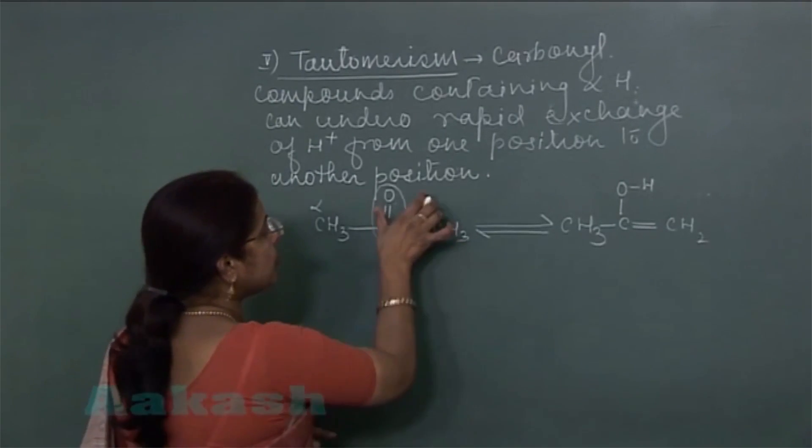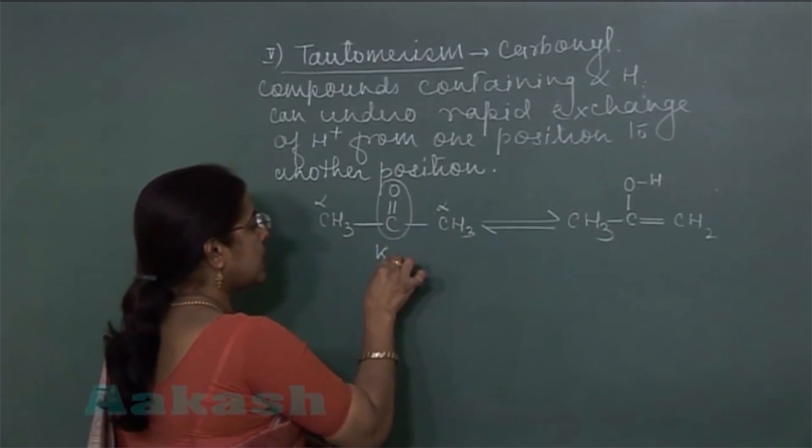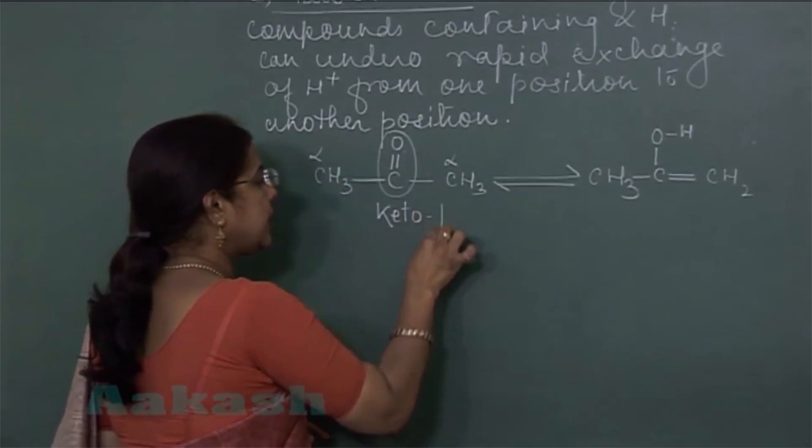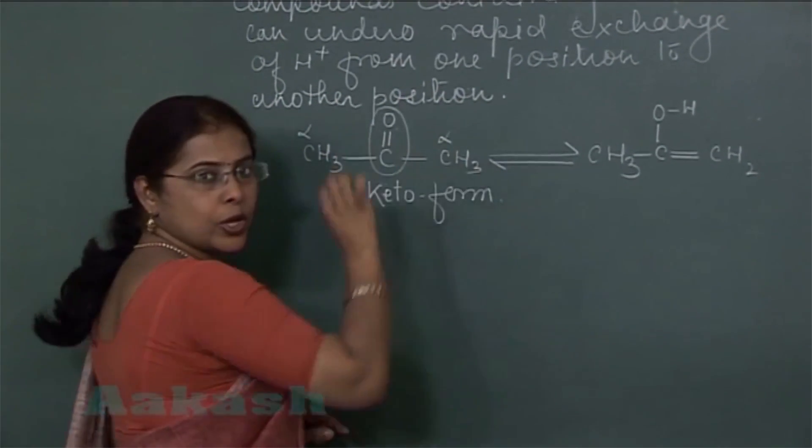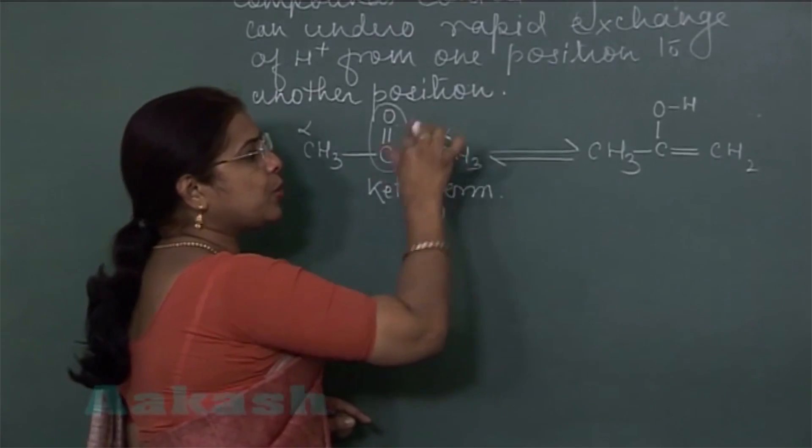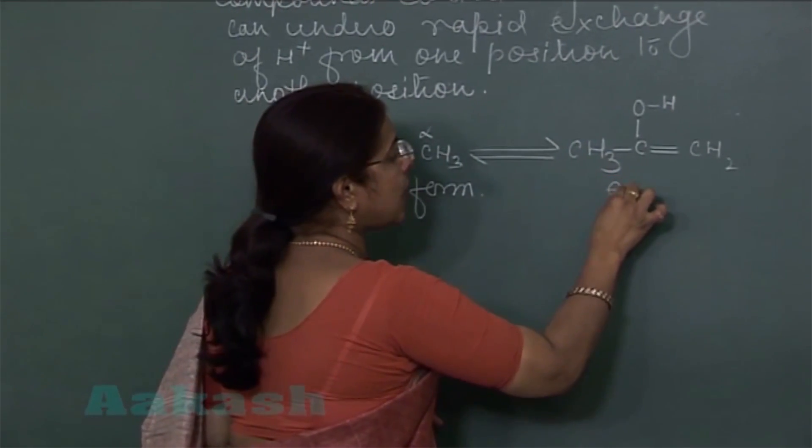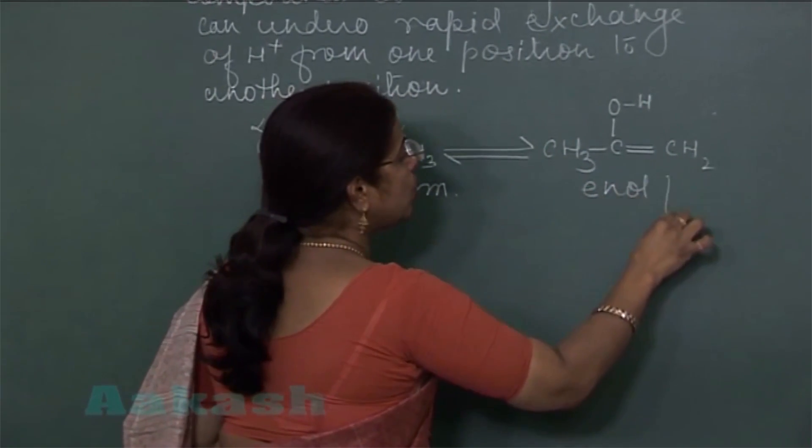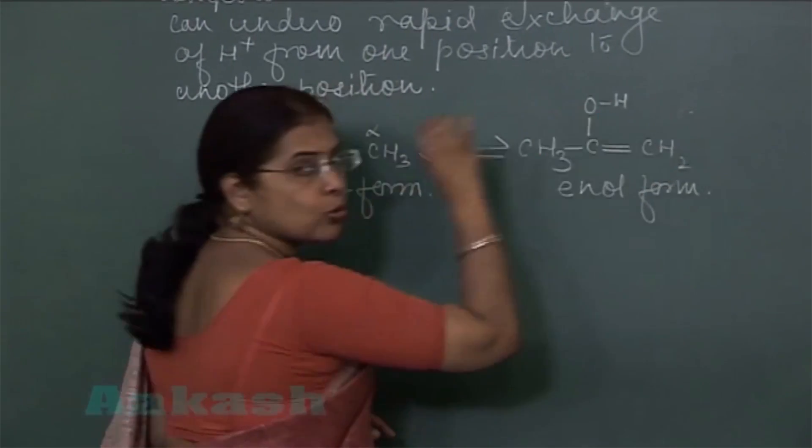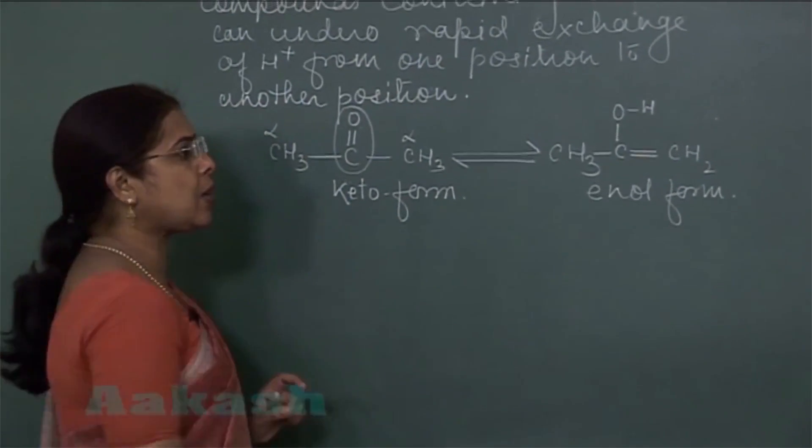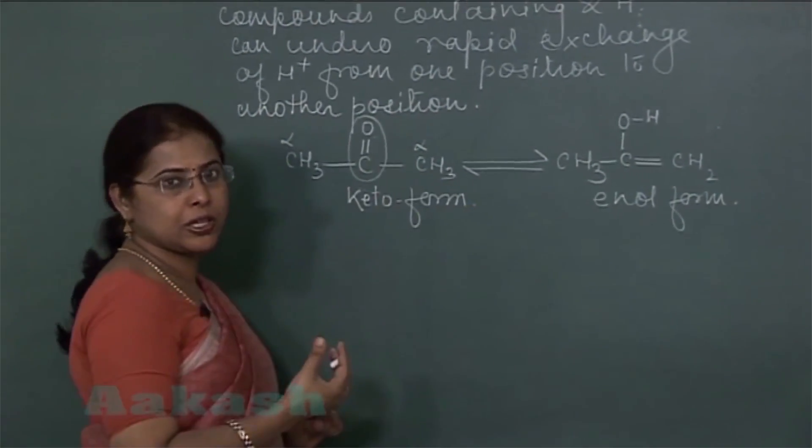If the structure is this one, it's called keto form. And when this ketone converts into this compound, it is known as enolic form. So carbonyl compounds have this possibility.